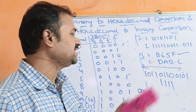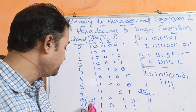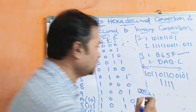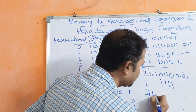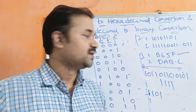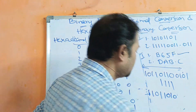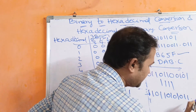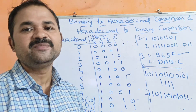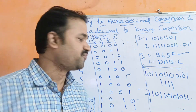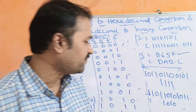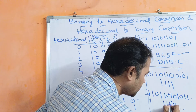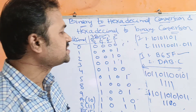Next problem: D A B dot C. D means 13, A means 10, B means 11, and C means 12. So 13 means 8 plus 4 plus 1, giving us 1 1 0 1. Next, A means 10, which is 8 plus 2, giving us 1 0 1 0. Next, B means 11, which is 8 plus 2 plus 1, giving us 1 0 1 1. Next, C means 12, which is the sum of 8 and 4, giving us 1 1 0 0. This is the binary notation for the hexadecimal number D A B dot C.